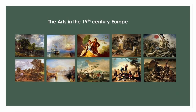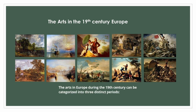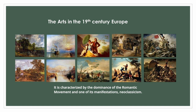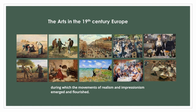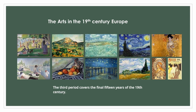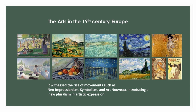The arts in Europe during the nineteenth century can be categorized into three distinct periods. The first period spans from the late eighteenth century to approximately 1850, characterized by the dominance of the Romantic movement and one of its manifestations, Neoclassicism. The second period includes the years between 1850 and 1886, during which the movements of realism and Impressionism emerged and flourished. The third period covers the final fifteen years of the nineteenth century, witnessing the rise of Neo-Impressionism, Symbolism, and Art Nouveau, introducing a new pluralism in artistic expression.